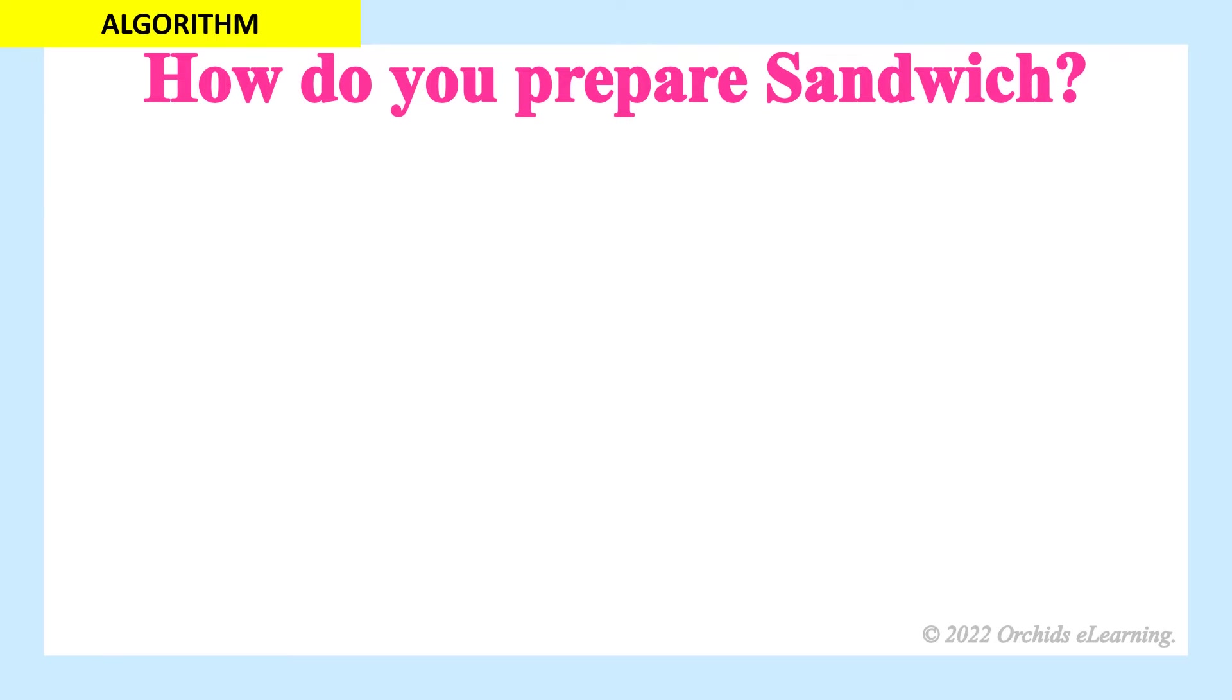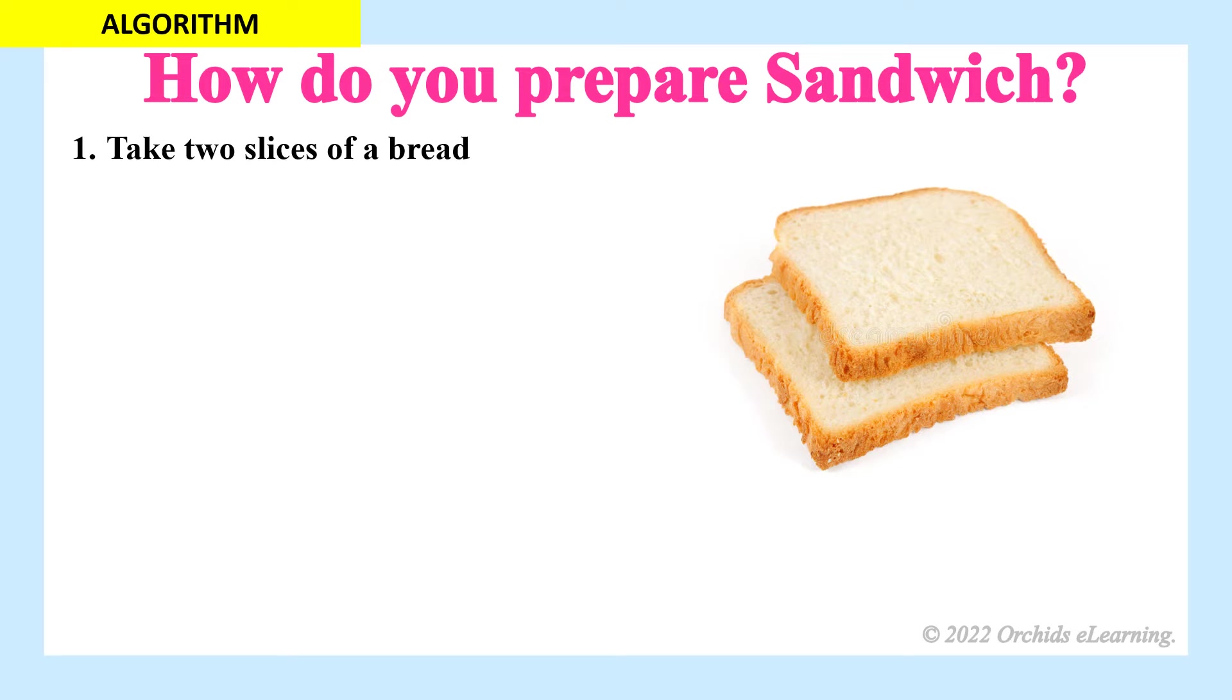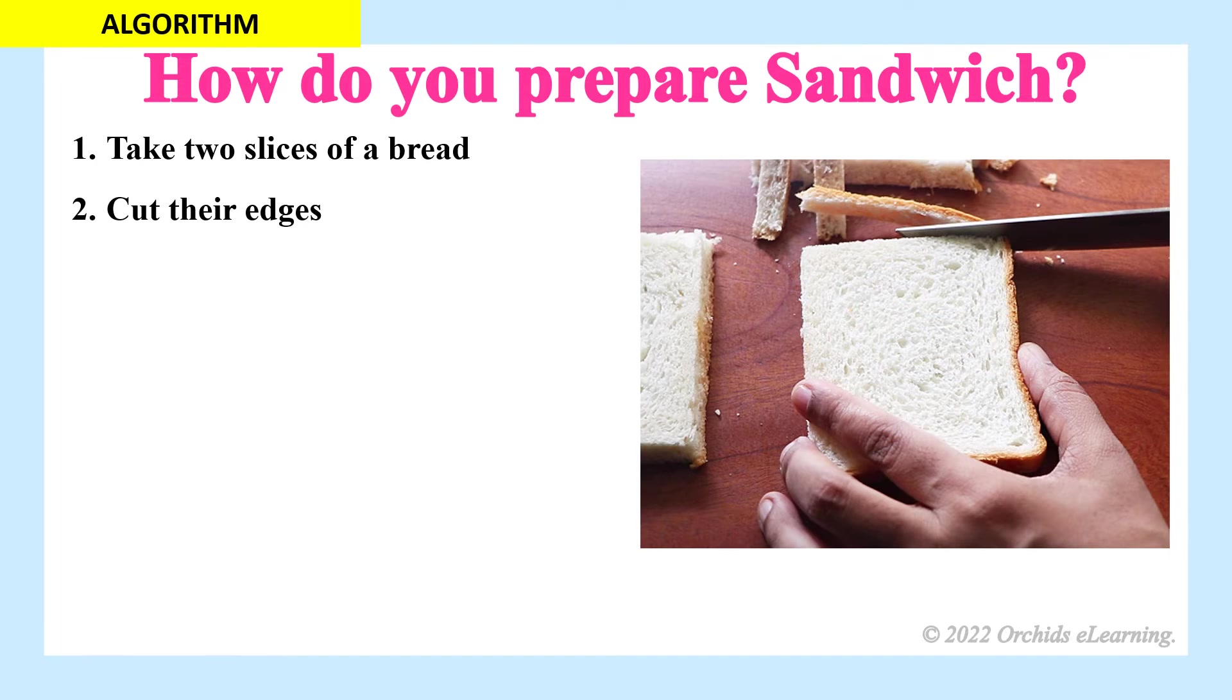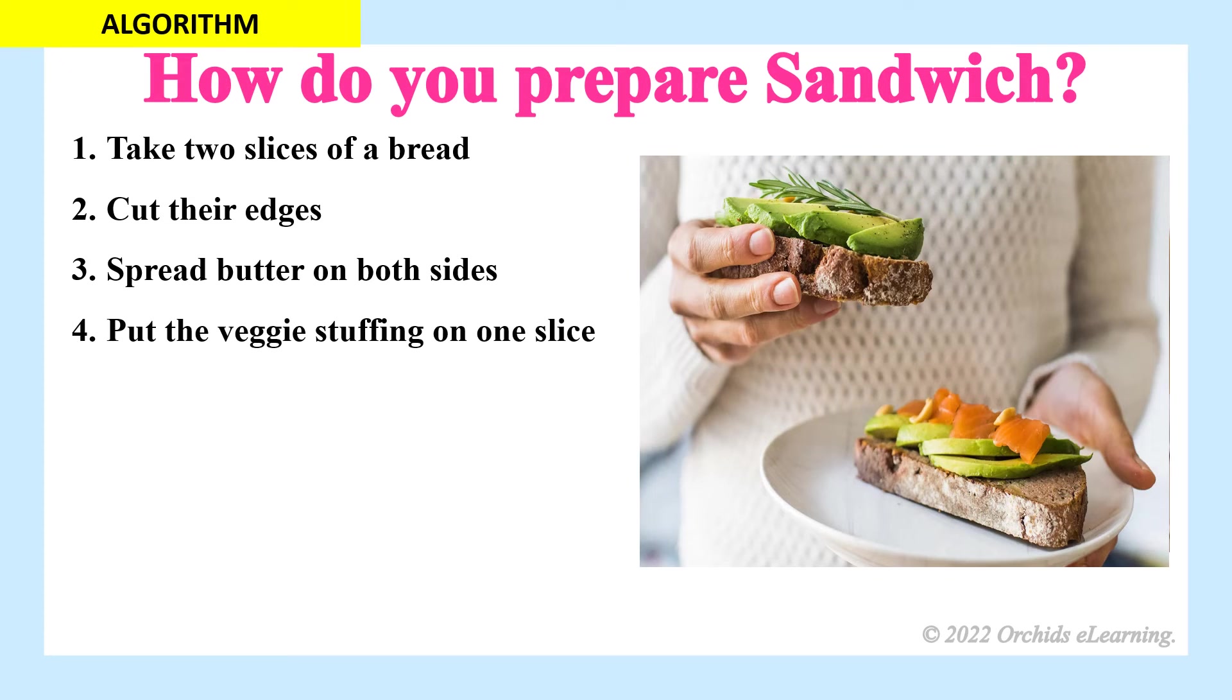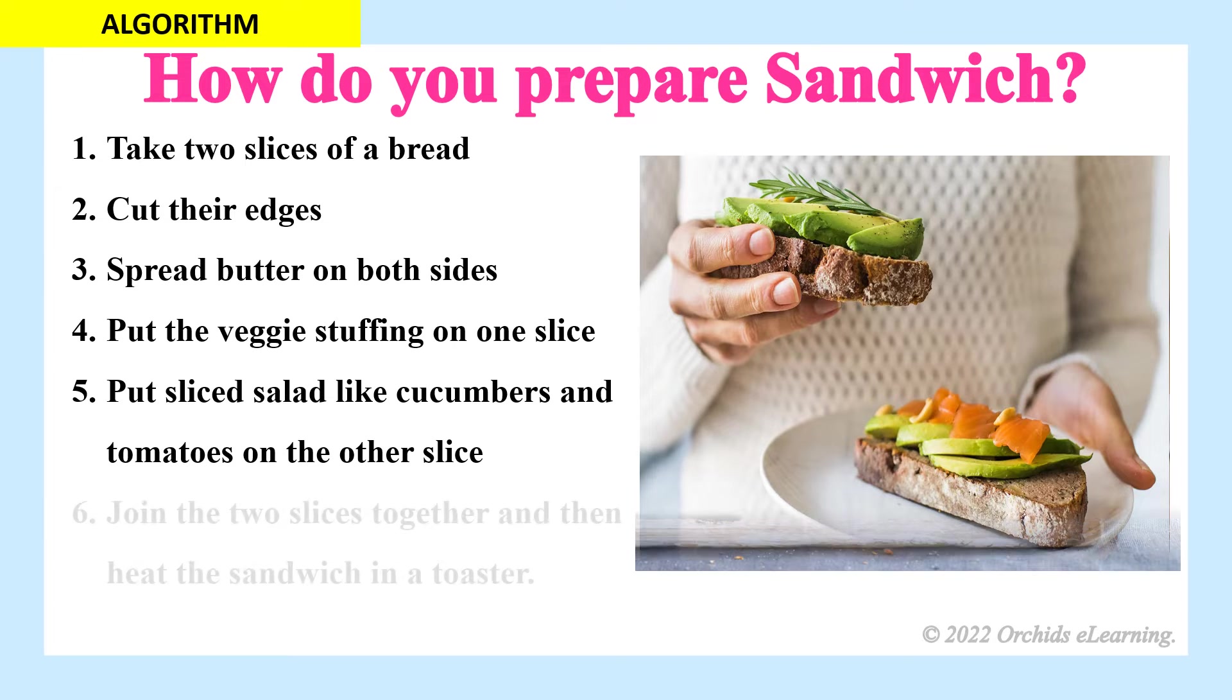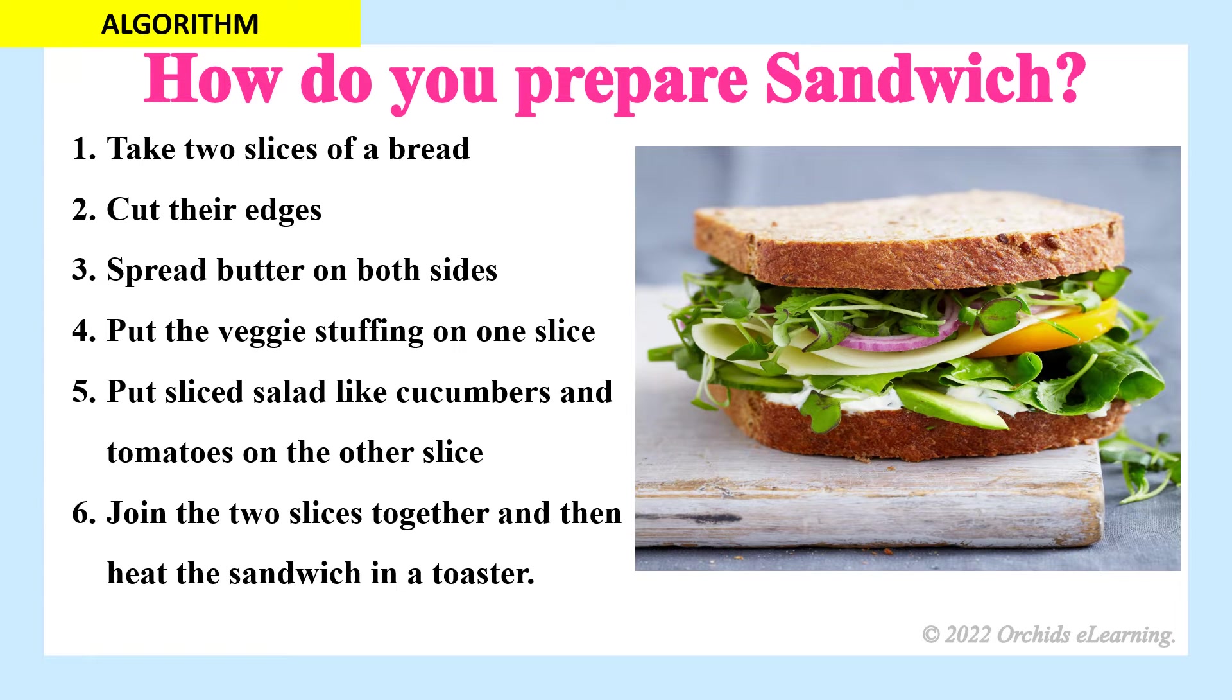How do you prepare sandwich? Take two slices of bread. Cut their edges. Spread butter on both sides. Put the veggie stuffing on one slice. Put sliced salad like cucumbers and tomatoes on the other slice. Join the two slices together and then heat the sandwich in a toaster. Your sandwich is ready.